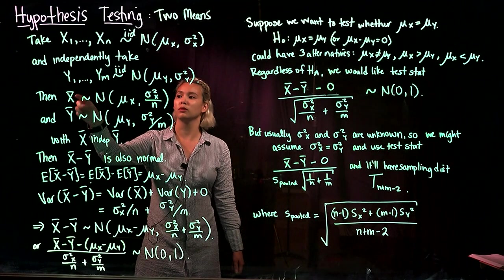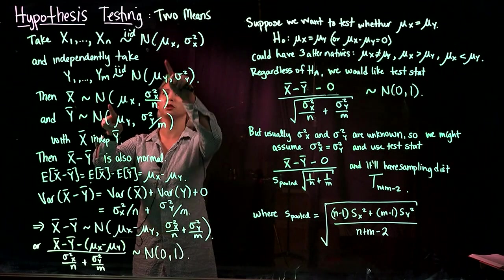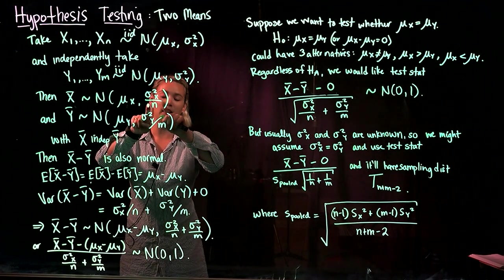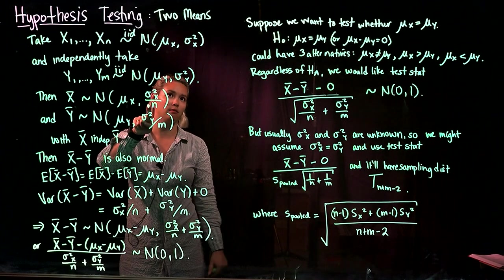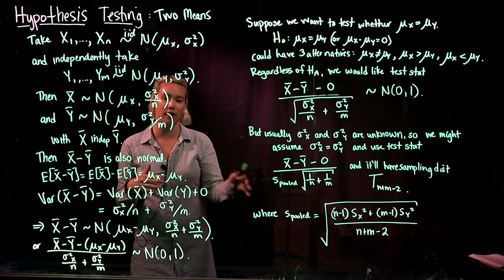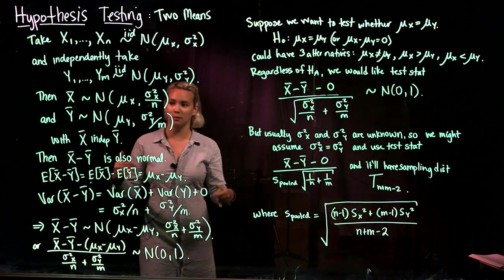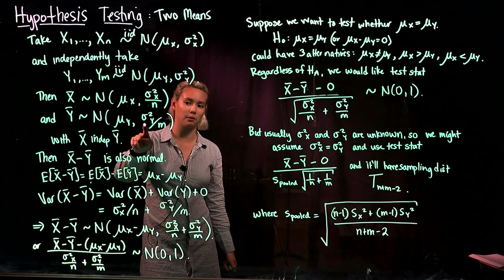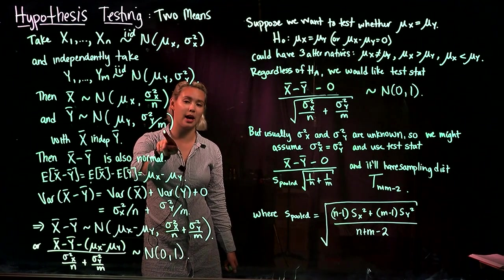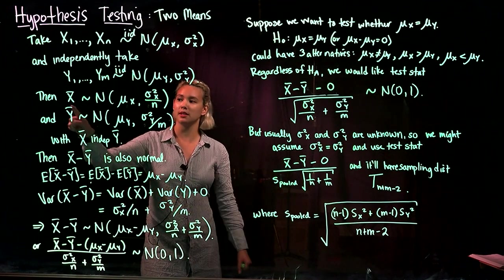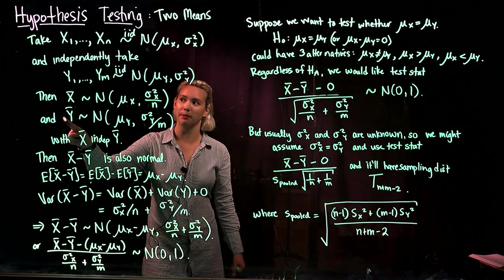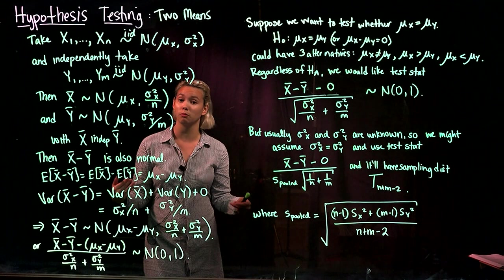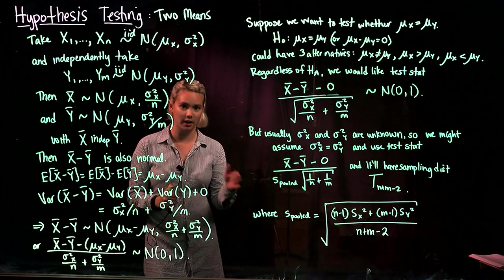We know that x̄ is going to have a normal distribution with mean mu x and variance sigma squared x divided by n. Similarly, ȳ is going to have a normal distribution with mean mu y and variance sigma squared y divided by m. We know these distributions and we know that x̄ and ȳ are independent, so we can figure out the distribution of x̄ minus ȳ.